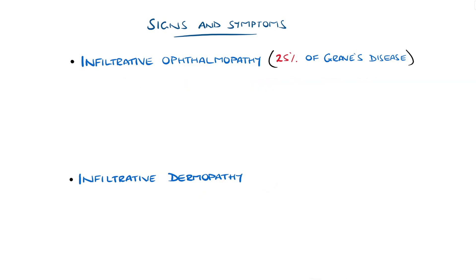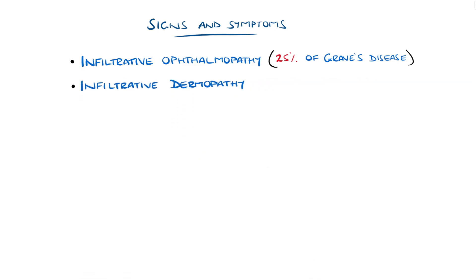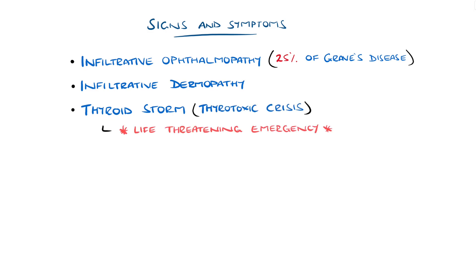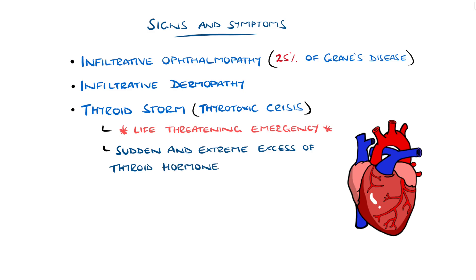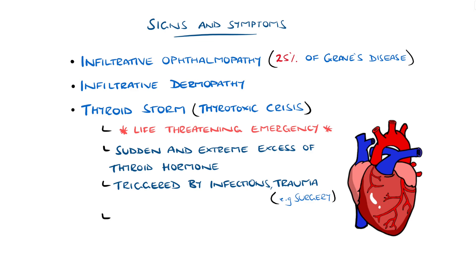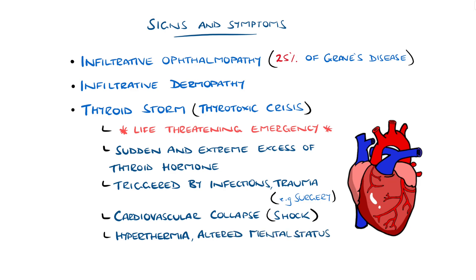Thyroid storm is a rare but important manifestation, also known as thyrotoxic crisis. It's a life-threatening emergency characterised by a sudden and extreme excess of thyroid hormone, often precipitated by infection or trauma like surgery. This can result in cardiovascular collapse and shock, and features include hyperthermia, mental status changes such as psychosis, as well as extreme agitation.